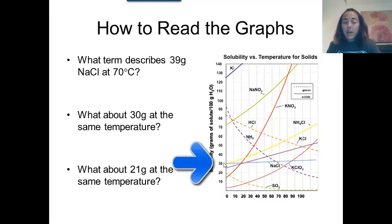But in this problem, I'm dissolving 39 grams. That's more than what that graph predicts. So for that reason, this is going to be a supersaturated solution. The amount I'm using is more than what's predicted on this graph.